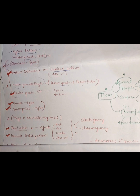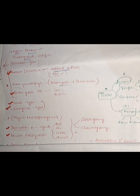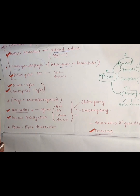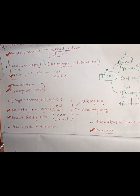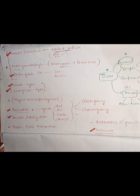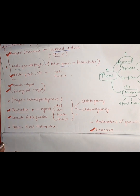Then we have double fertilization. How was double fertilization discovered? You should know the whole process. After this, we have the pollen-pistil interaction. I did not mark pollen-pistil interaction as the most important because questions on it are very rare.